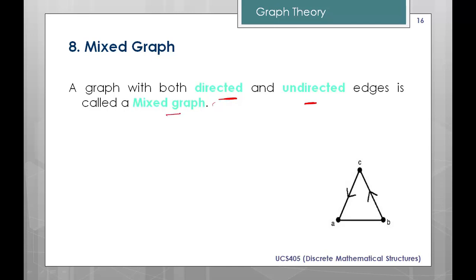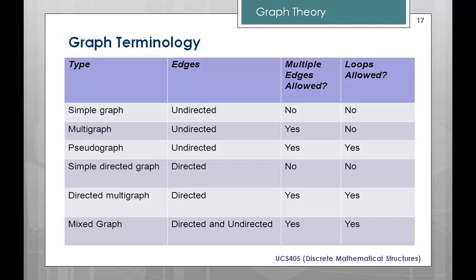Next, mixed graph — a graph with both directed and undirected edges is called a mixed graph. In the example, one edge is without direction and two are with direction. Now, graph terminology: the different types of graphs we have studied are simple graph, multigraph, pseudograph, simple directed graph, directed multigraph, and mixed graph. Some are undirected, some directed, and mixed graph has both.